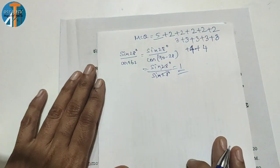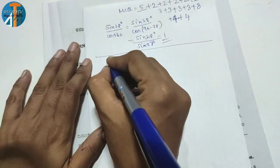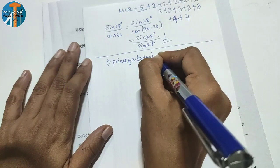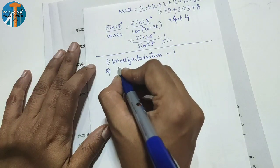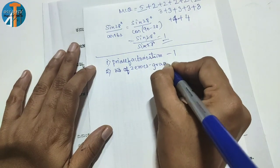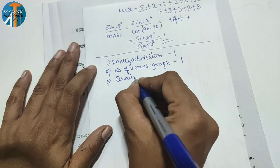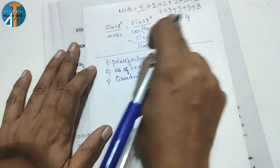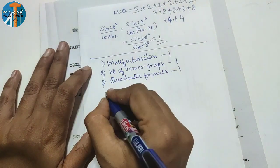Let me list all the topics covered: Prime factorization (1 mark), number of zeros from graph (1 mark), quadratic formula (1 mark), trigonometry (1 mark), probability (1 mark) - that's 5 marks MCQ. Then solve for x and y, distance formula, tangent construction, probability - each 2 marks. Three marks: irrational number, construction of triangle, median, circle theorem. Four marks: triangle theorem and linear graph.